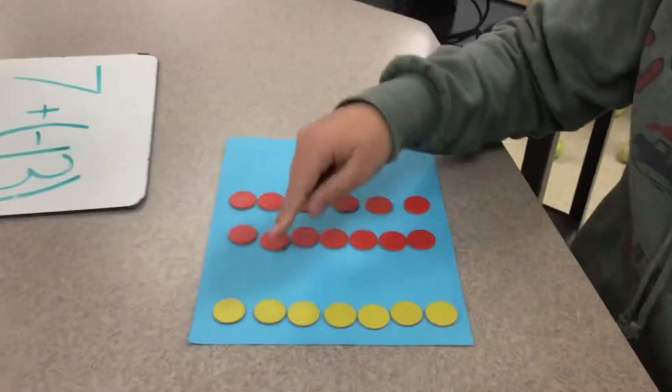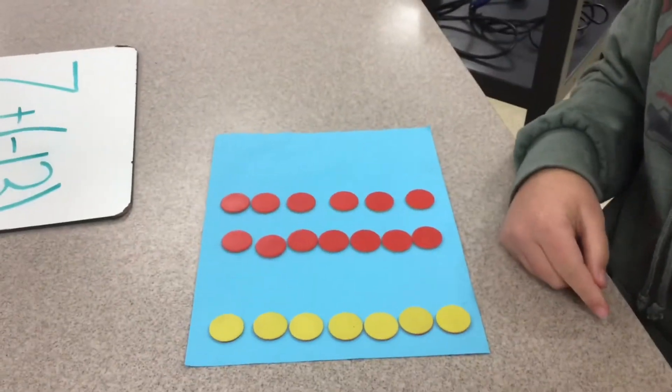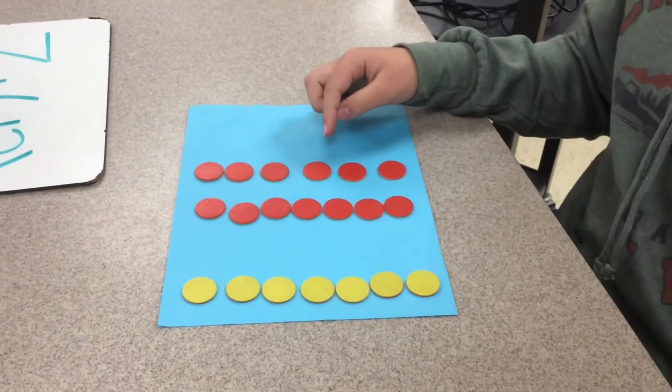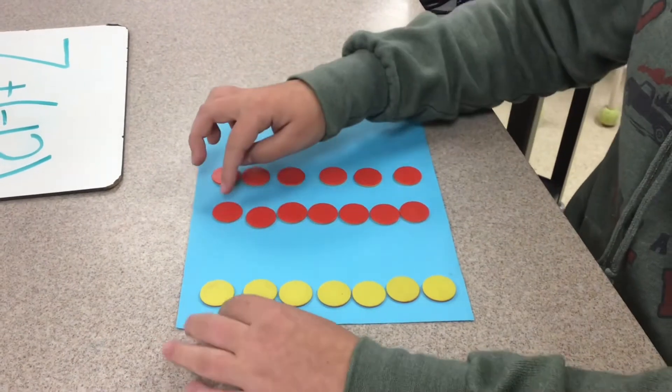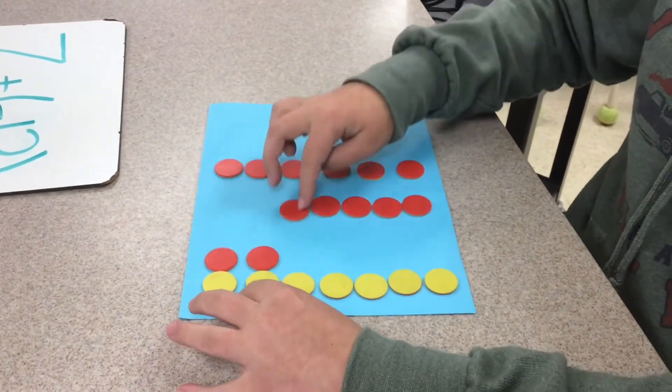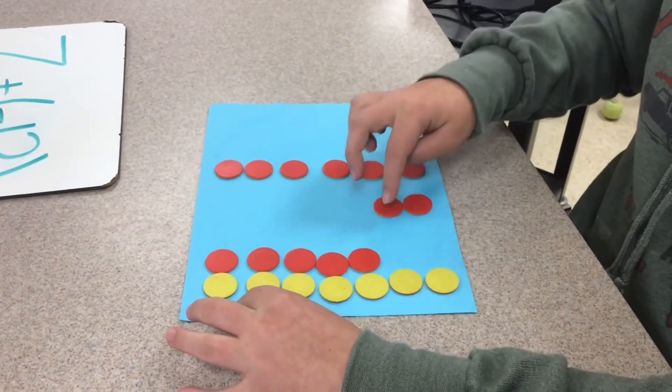So you have seven yellow chips because they're positive, and then you have 13 red chips, which is negative 13. First you have to make pairs of zero. So you take these and move them over by the yellows to make the pairs.